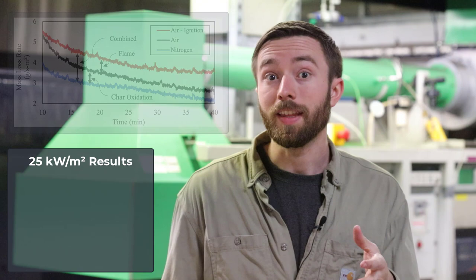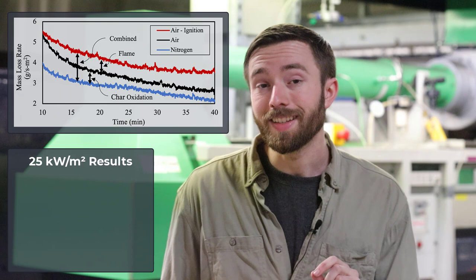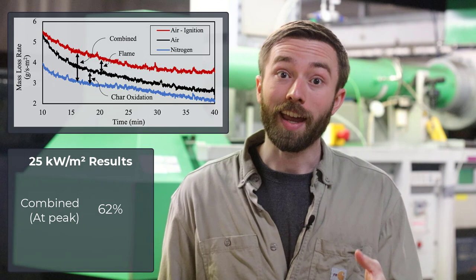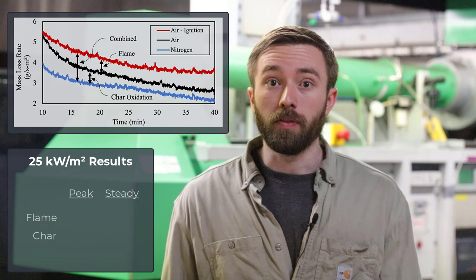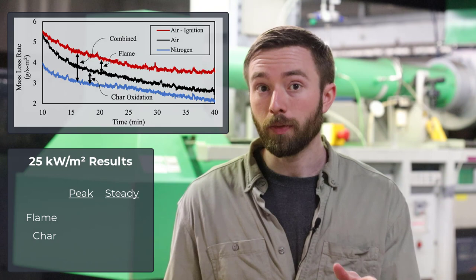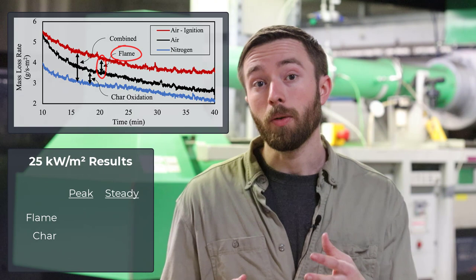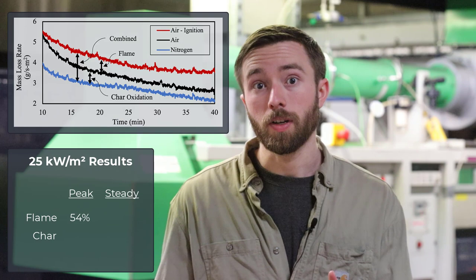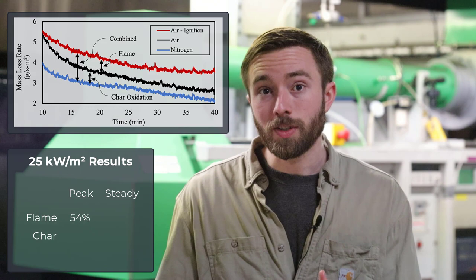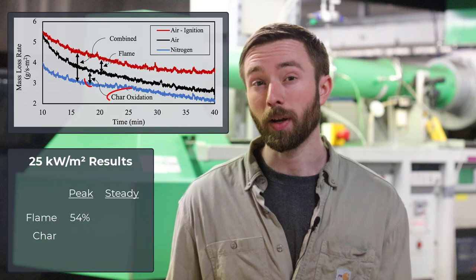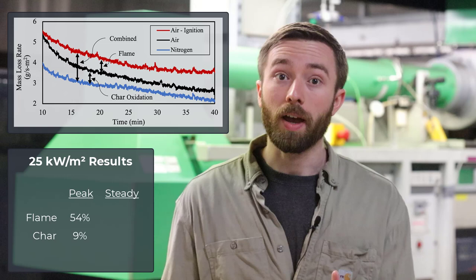Taking the data at 25 kilowatts per meter squared as an example: the difference between the air with ignition case and the nitrogen case represents the combined contribution of both flame heat feedback and char oxidation, which in this case is approximately 62 percent of the peak mass loss rate seen for the air with ignition case. Using all three curves to isolate the individual contributions, the difference between air with ignition and air without ignition represents the flame heat feedback term, which amounts to approximately 54 percent of the peak mass loss rate. The char oxidation contribution, derived by comparing air without ignition to nitrogen, is approximately 9 percent of the total mass loss rate at the peak.